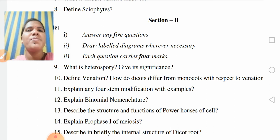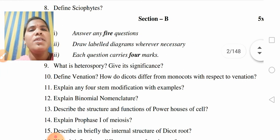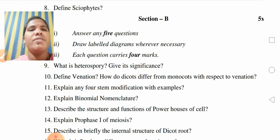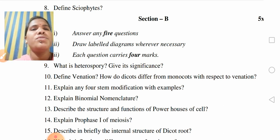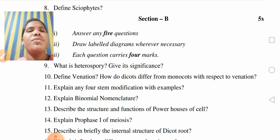Let's see the Section B questions. What is heterospory? Give its significance. Define venation. How do dicots differ from monocots with respect to venation? Explain any four stem modifications with examples. Explain binomial nomenclature.